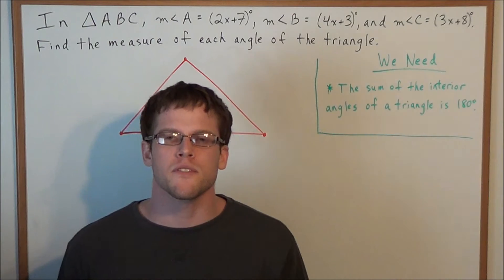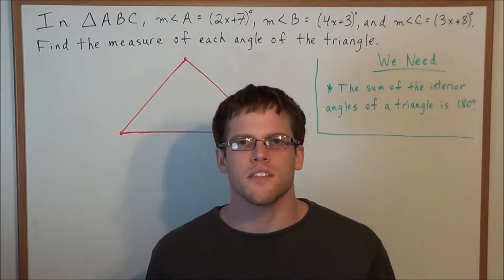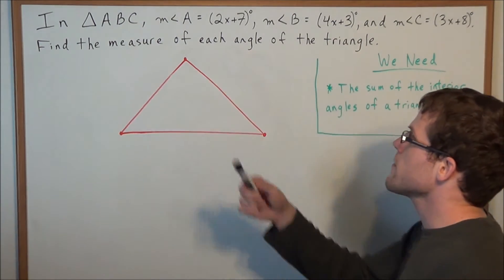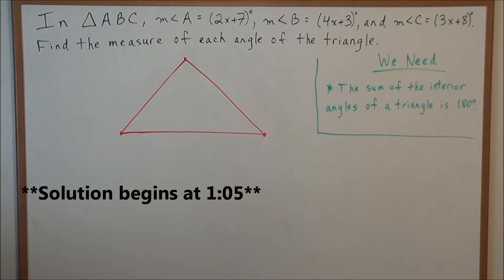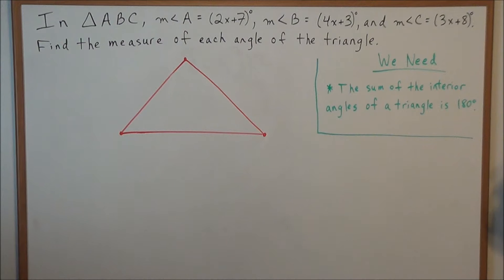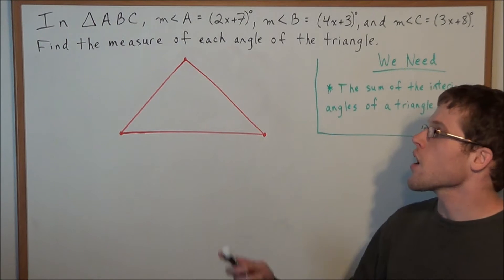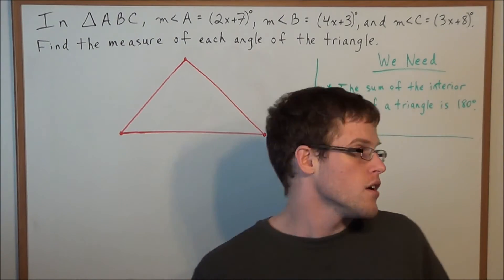Hello YouTube students, my name is Vincent and today I want to take a look at the sum of the interior angles of a triangle. We have triangle ABC where the measure of angle A is 2x plus 7 degrees, the measure of angle B is 4x plus 3 degrees, and the measure of angle C is 3x plus 8 degrees. We need to find the measure of each angle of this triangle.